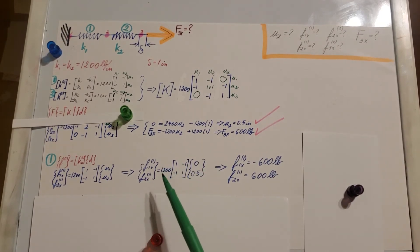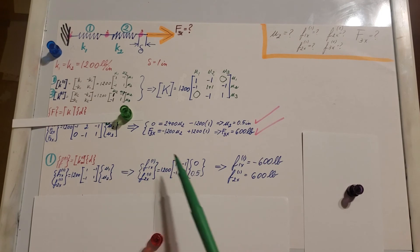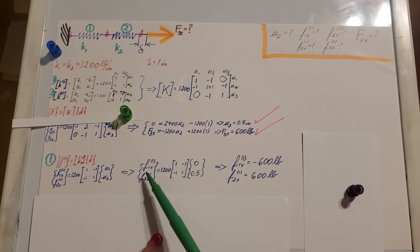Fill in the values that we know, and which are u1, displacement is 0, u2, 0.5, we found it right here. Simply multiply out this matrix, and we will find our values for F1x belonging to element 1, negative 600 pounds, F2x belonging to element 1, 600 pounds.